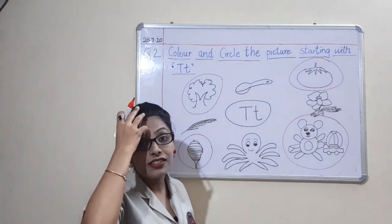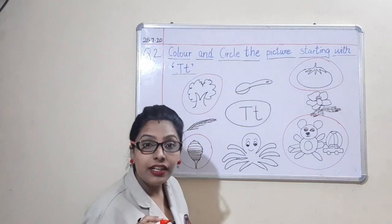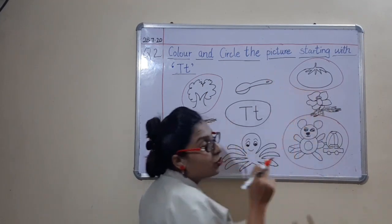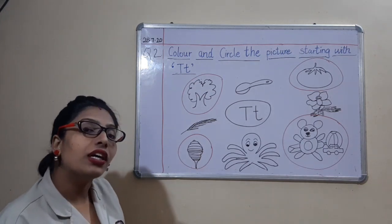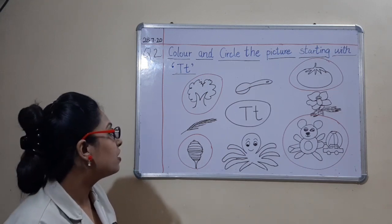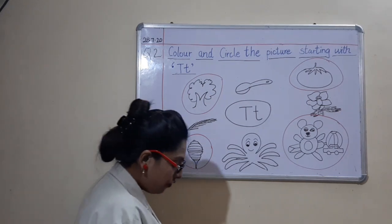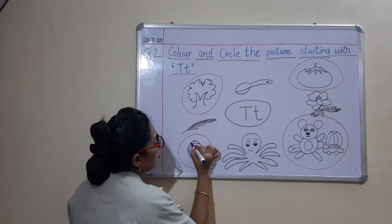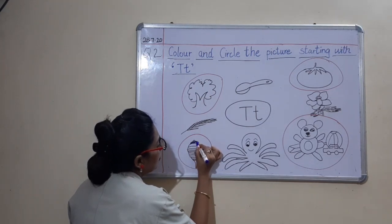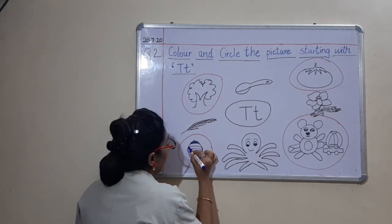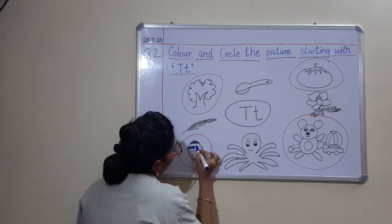Now what you have to do? You have to color the pictures which you have circled: tree, top, toys, tomato — you have to color these four. When you color, you should not take the color out and you should not leave any white spaces. The color should stay inside the lines. There should be no whitespace and the color should not come out.